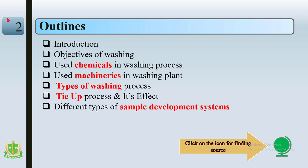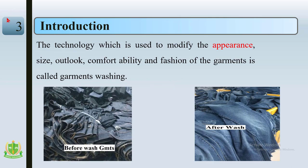Let's talk about the outline of this presentation. This presentation contains: introduction, objectives of washing, used chemicals and machineries in the washing plant, types of washing process, process and its effect, and different types of sample development system. You may click the icon below to find the source.